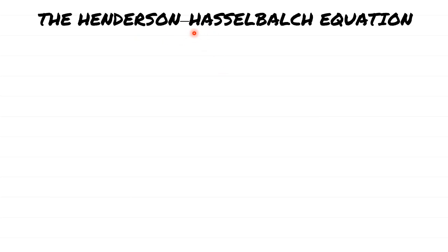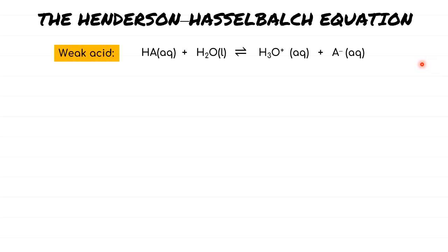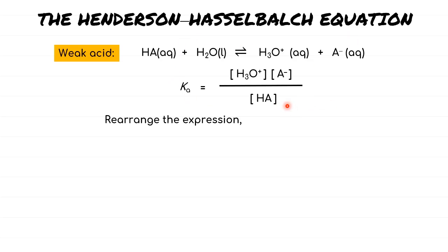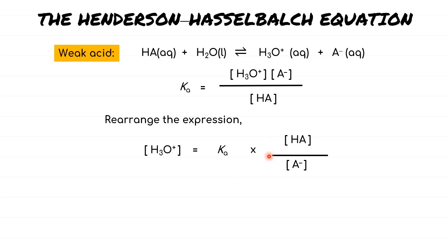Buffer solutions of a particular pH can be prepared using the Henderson-Hasselbalch equation. Since we've already learned the compositions of buffer solutions, for any weak species — either acid or base — the dissociation equations together with Ka or Kb expressions are required in calculations of pH. This Henderson-Hasselbalch equation is formed by first rearranging the Ka or Kb expressions until the desired species — either H₃O⁺ or OH⁻ — is kept on the left-hand side. Since our example deals with weak acid, we're going to keep only H⁺ or H₃O⁺ on the left-hand side.